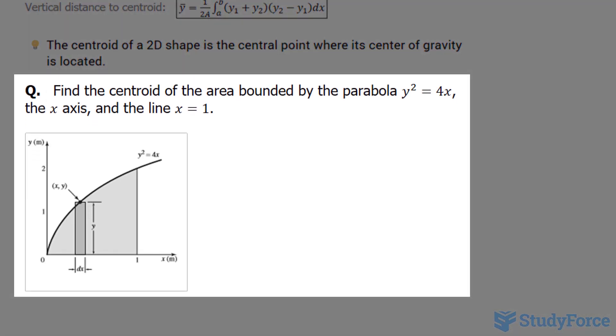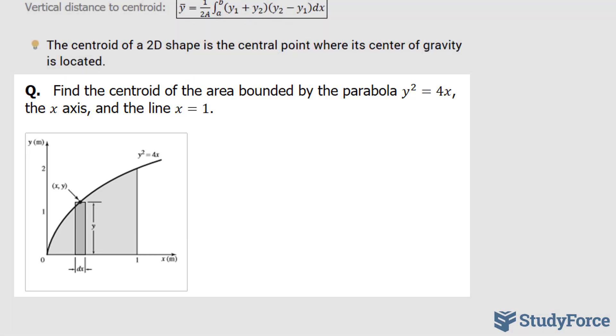find the centroid of the area bounded by the parabola y squared is equal to 4x, the x-axis, and the line x is equal to 1. An illustration of this function is shown right here, and notice that we are trying to find the centroid for this shape that is formed.